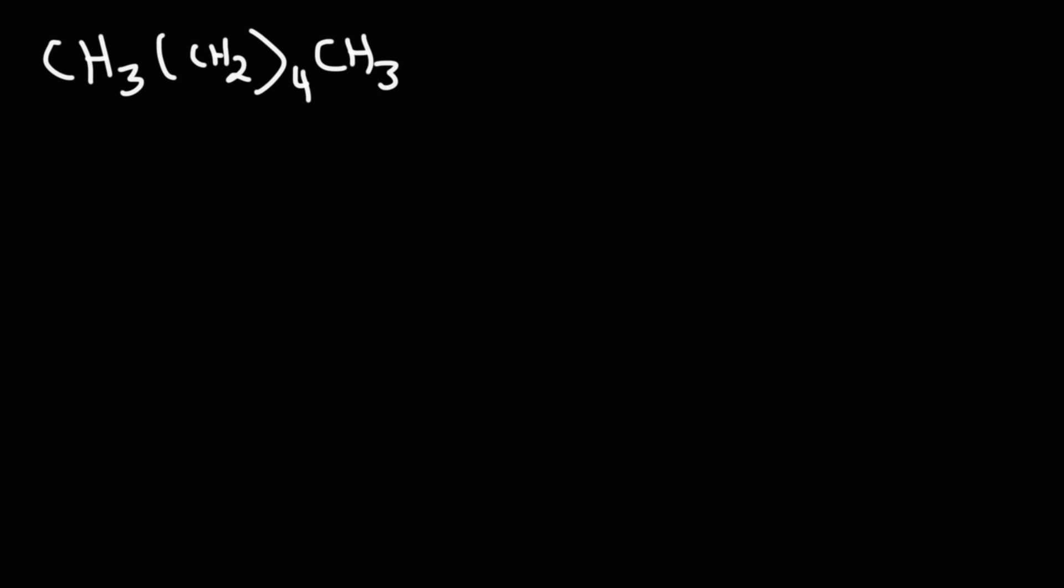How can we convert this into a skeletal structure? So this structure is equivalent to what I'm about to draw here. I'm going to expand it. Notice that we have four CH2s, or four methylene groups. So we have a total of six carbon atoms in a straight chain.